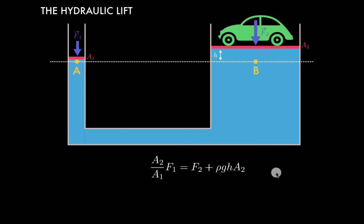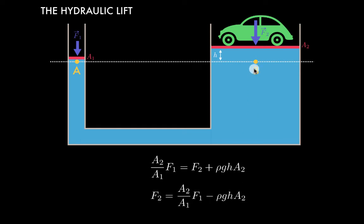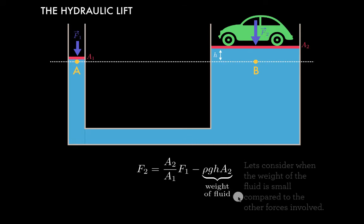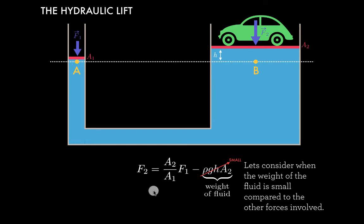Our goal is to solve for F2 in terms of F1. Rearranging, we get that F2 equals the ratio of the areas A2 over A1 times the force F1, minus a term due to the column of water — because the piston at A2 is at a higher height than the piston at A1, so we also have a contribution from that column of fluid.